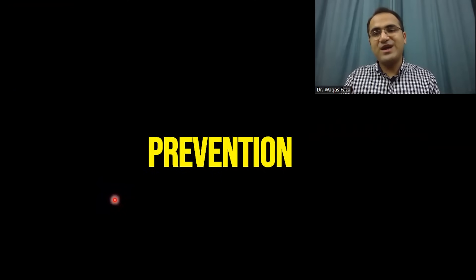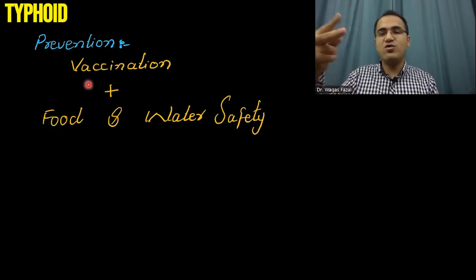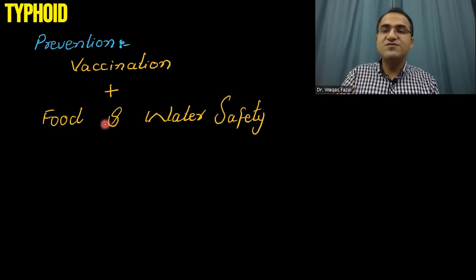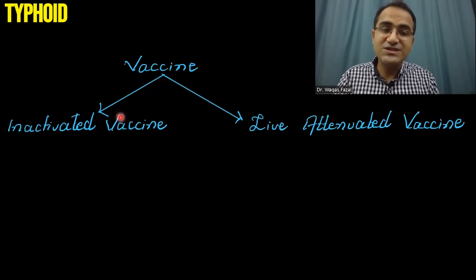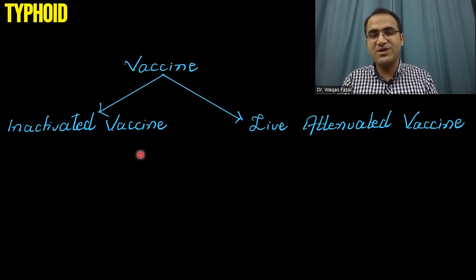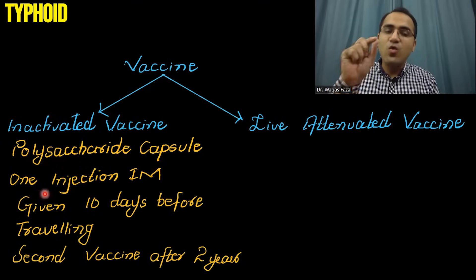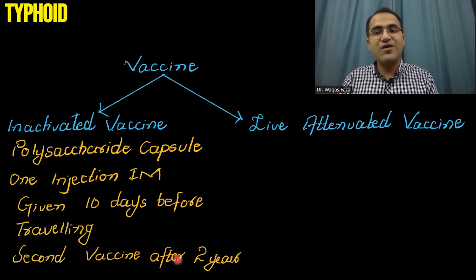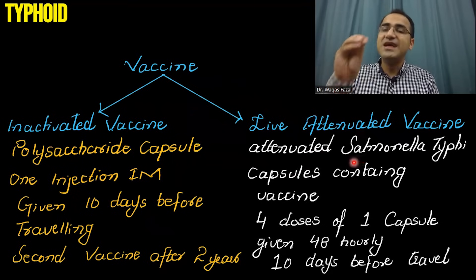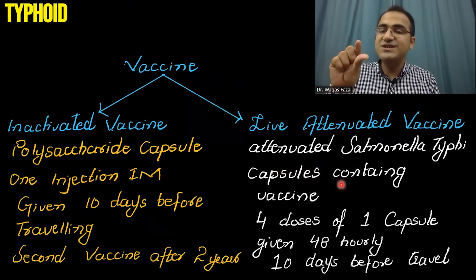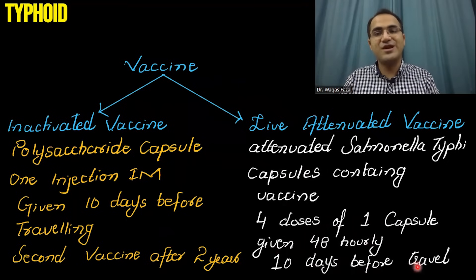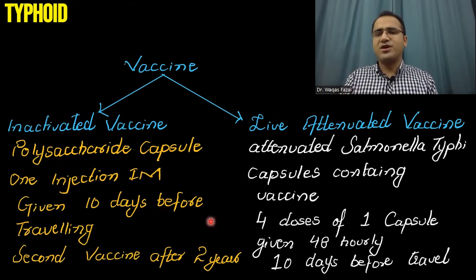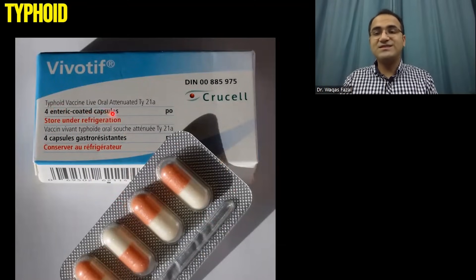Prevention of typhoid involves vaccination and food and water safety. Vaccination alone is not enough — food and water safety is also very important. There are two types of vaccines: an inactivated vaccine, which is a polysaccharide capsule injection given once, 10 days before traveling to an endemic area, with a booster after two years; and a live attenuated oral vaccine given as four capsule doses 48 hours apart, 10 days before travel. Remember, neither vaccine confers lifelong immunity, so food and water safety is more important.